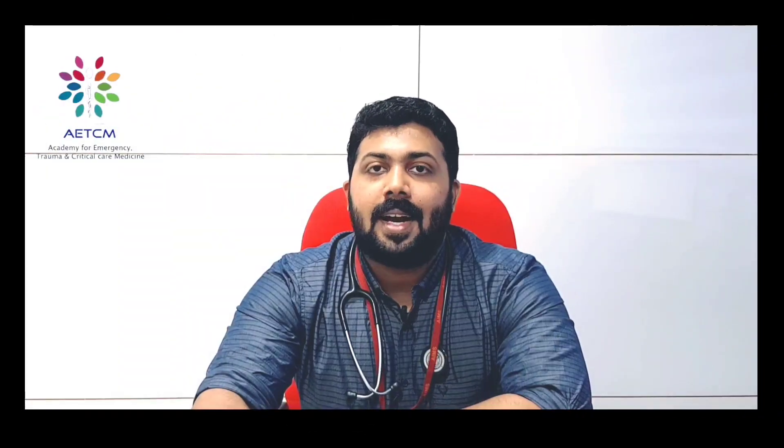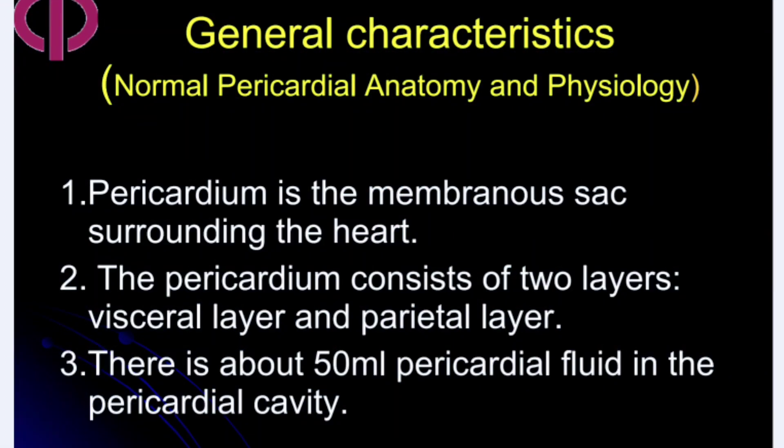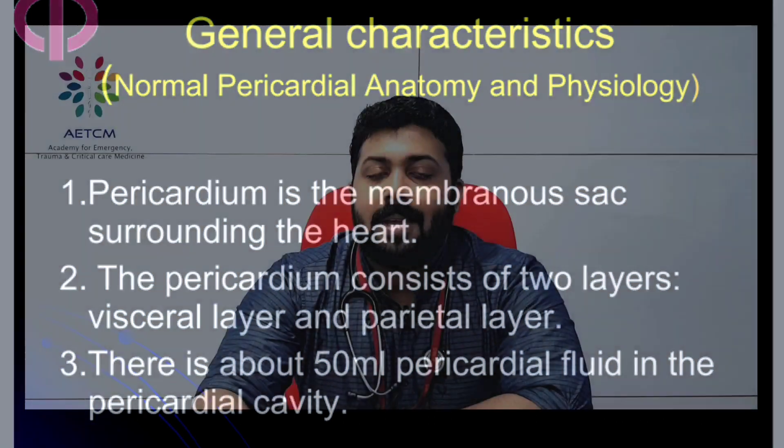Today we are going to talk about pericardial diseases. The pericardium is the membranous sac surrounding the heart. It consists of two layers: the visceral layer and the parietal layer. Normally there is about 25 to 50 milliliters of pericardial fluid in the pericardial cavity.